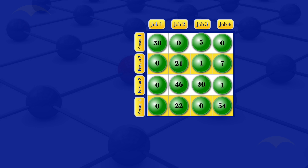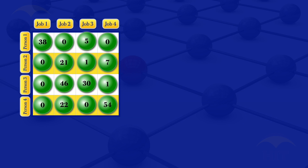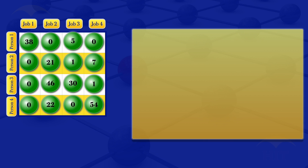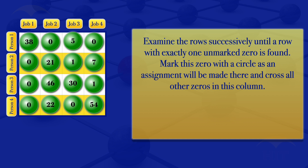We now examine rows successively until a row with exactly one unmarked zero is found, then mark it with a circle as an assignment and cross out all other zeros in that column. Row one has more than one zero, so we check row two — it has exactly one zero, so we circle it and cross out all other zeros in column one.